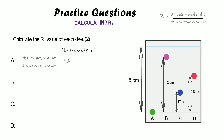For dye A, the dye has actually travelled zero centimetres — it hasn't moved from the baseline — so zero divided by five gives an RF of zero. That tells us the dye is insoluble in this solvent. Dye B moved 4.2 centimetres; 4.2 over 5 is 0.84. Dye C travelled 1.7; 1.7 over 5 is 0.34. Dye D travelled 2.6; 2.6 divided by 5 is 0.52. All less than one.